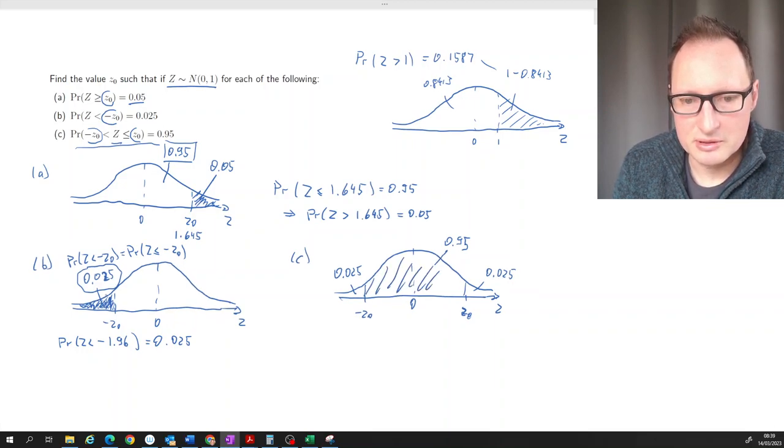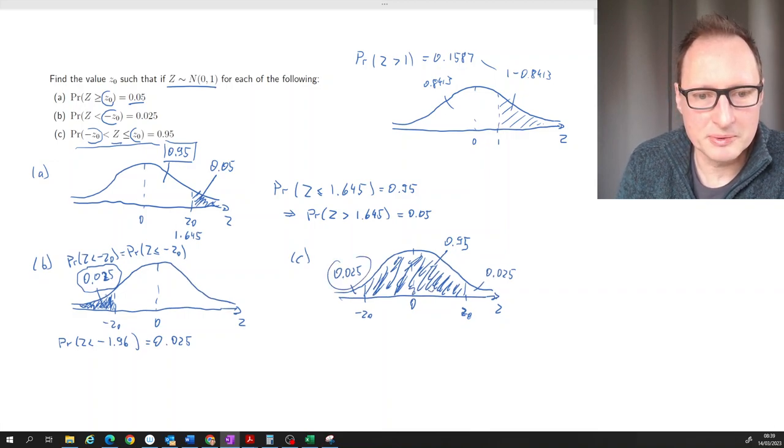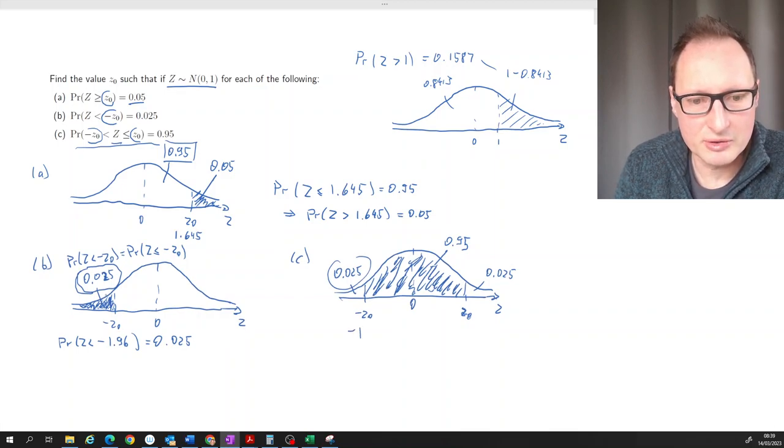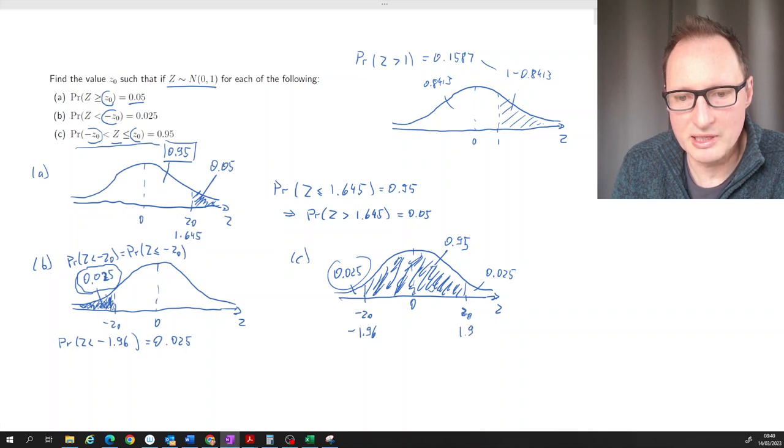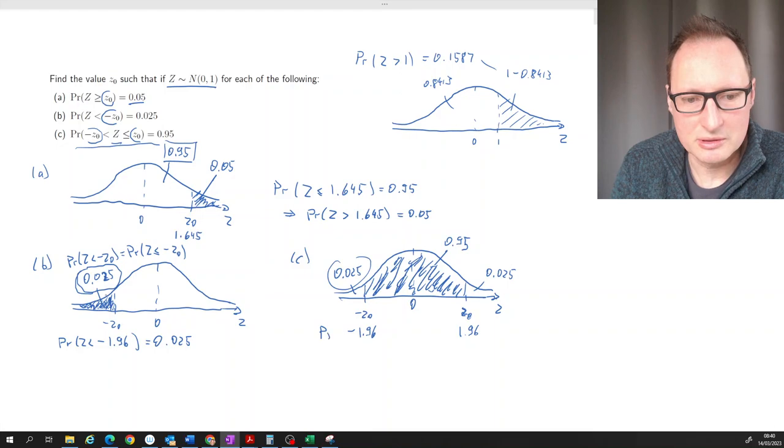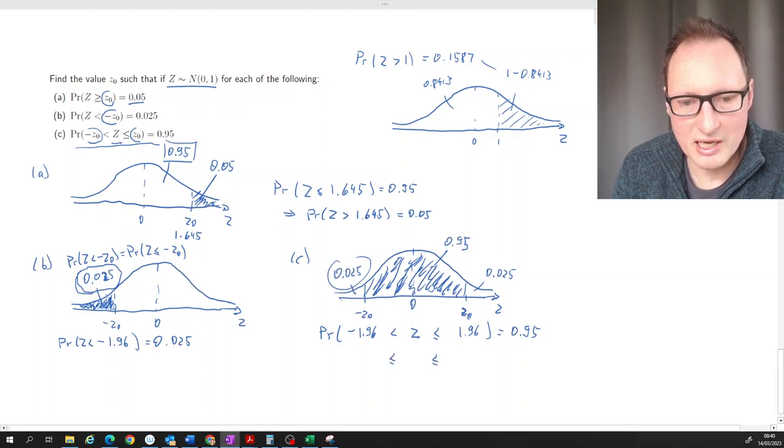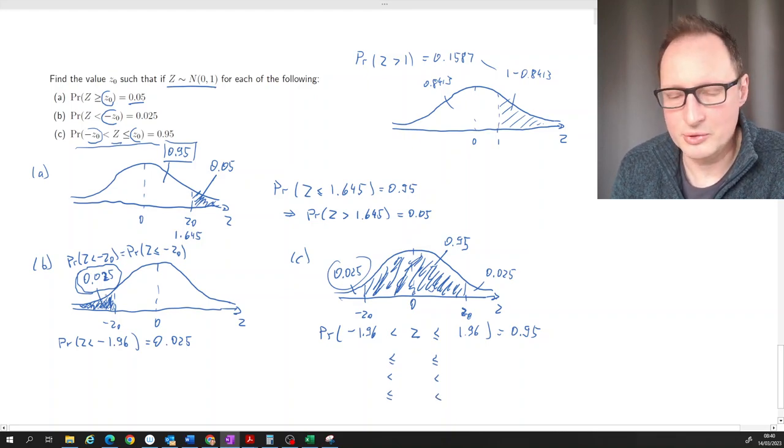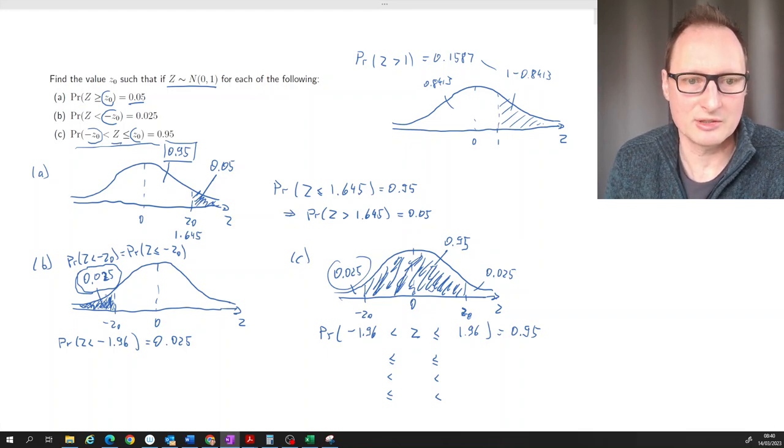This is the probability we're looking for. Perhaps you can realize that we already know at least half of that solution because this probability is exactly the same we were looking for in part (b). We know this value here is going to be -1.96, and because of symmetry of the standard normal distribution, this has to be 1.96. So the probability that z is between these two values is equal to 0.95. Remember, it doesn't matter whether you write smaller or equal on both sides or only smaller, because we're dealing with a continuous distribution where the probability that z is exactly 1.96 or -1.96 is zero.